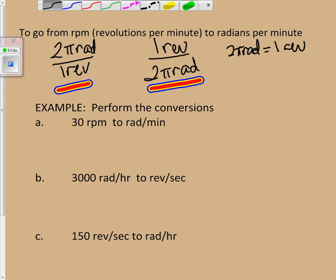So, let's take a look at our first one here. We're going to go from 30 rpm, revolutions per minute, to radians per minute.